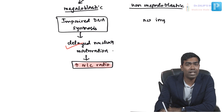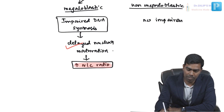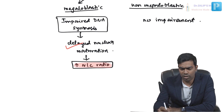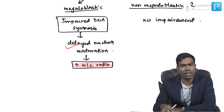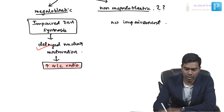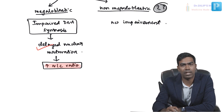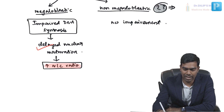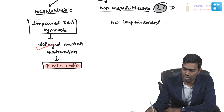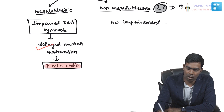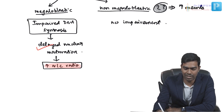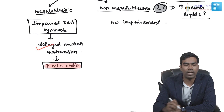In non-megaloblastic macrocytosis, there is absolutely no impairment of DNA synthesis. Why you get macrocytosis in non-megaloblastic causes, we don't really know. But there are some theories, such as excessive membrane lipids — probably due to redundant membrane — which could be the reason for non-megaloblastic macrocytosis.